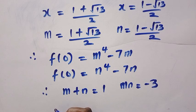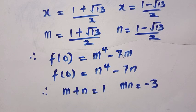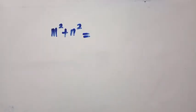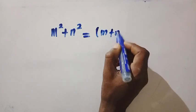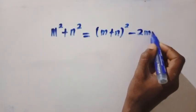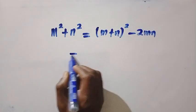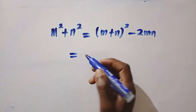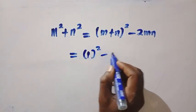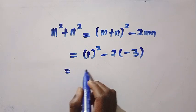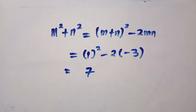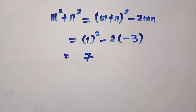In the next step, we want to show that these two expressions are equal. First, let's find m squared plus n squared. The formula is m plus n all squared minus 2mn. We have 1 squared minus 2 times minus 3, and with this, we get m squared plus n squared equals 7.